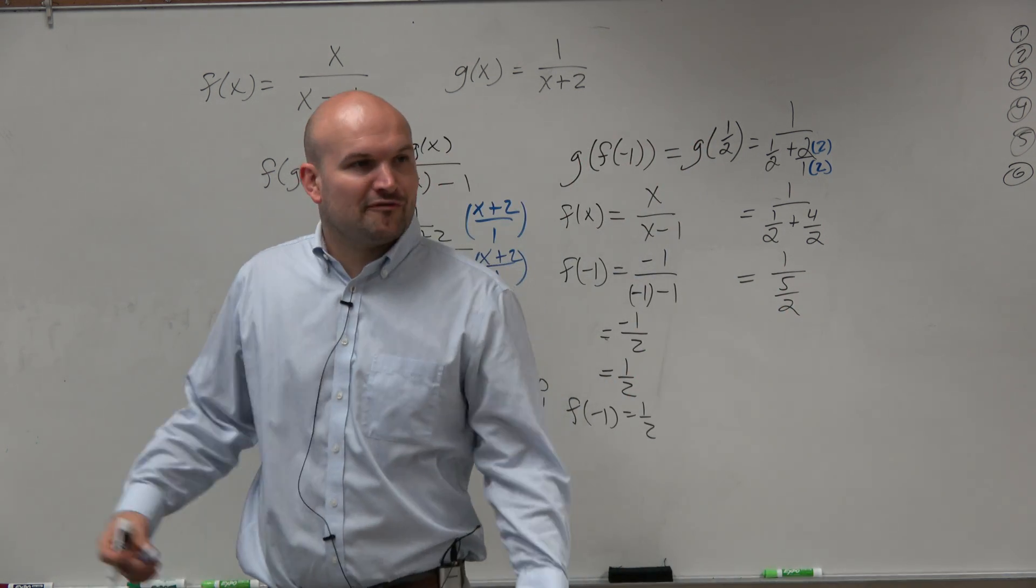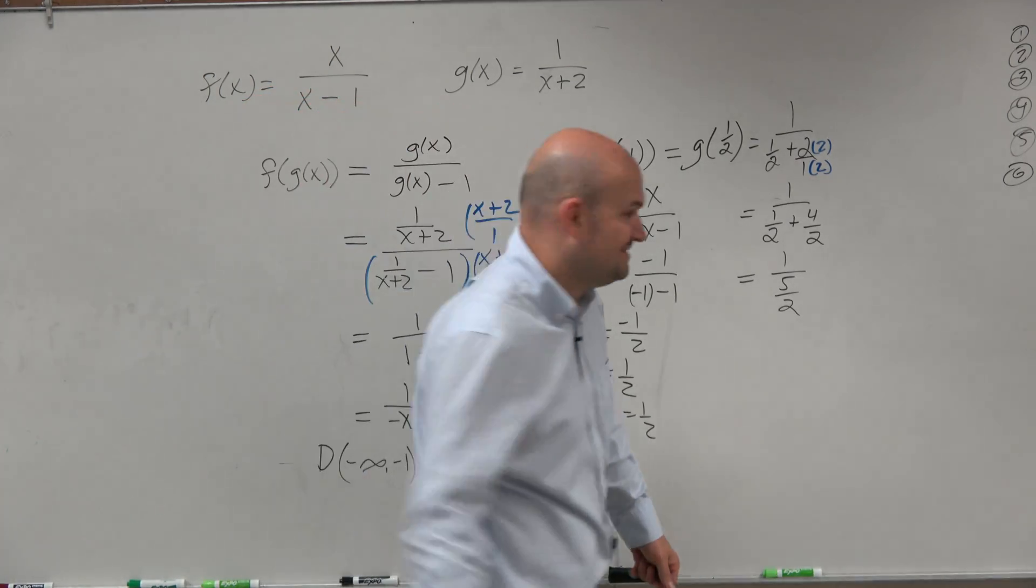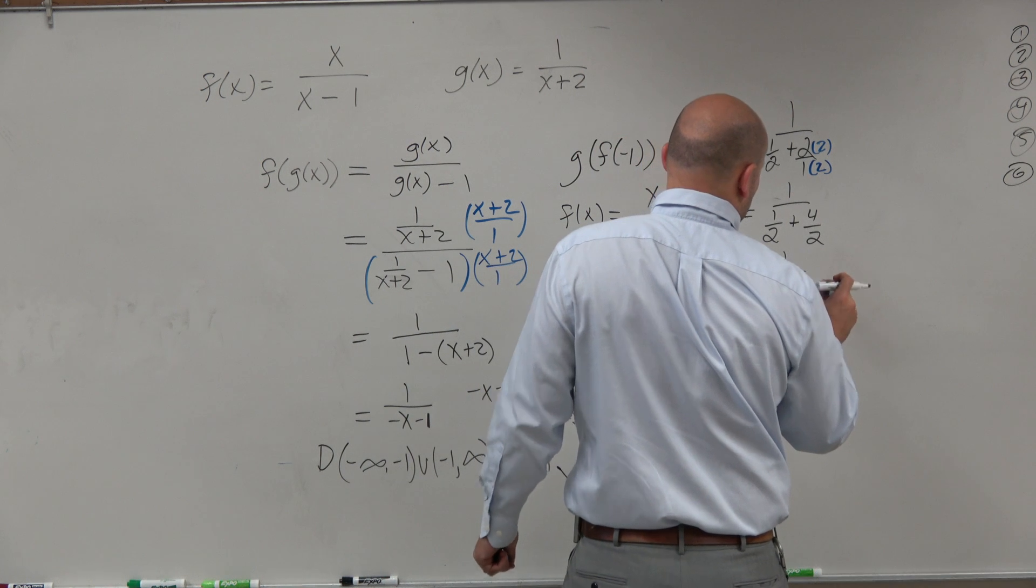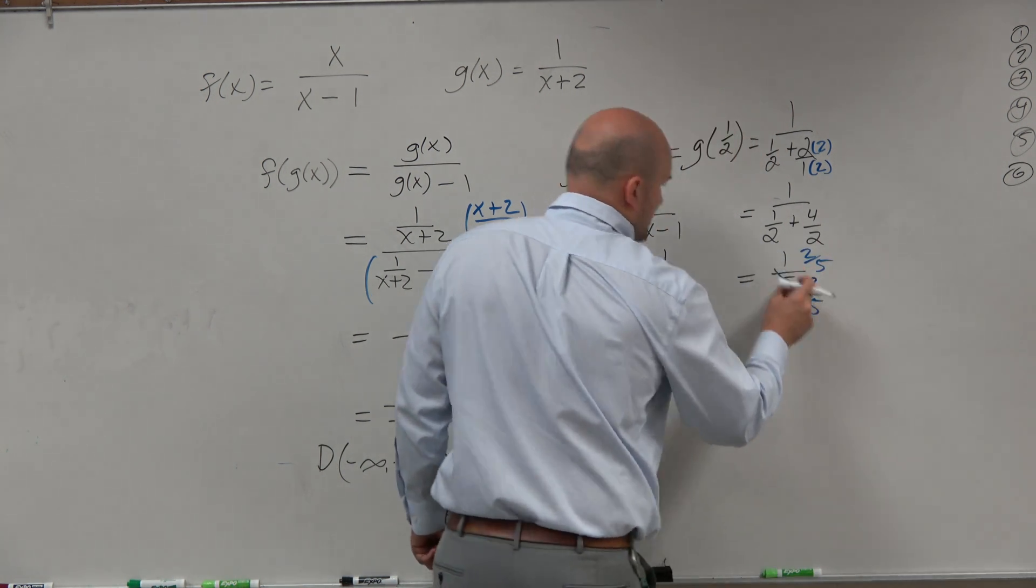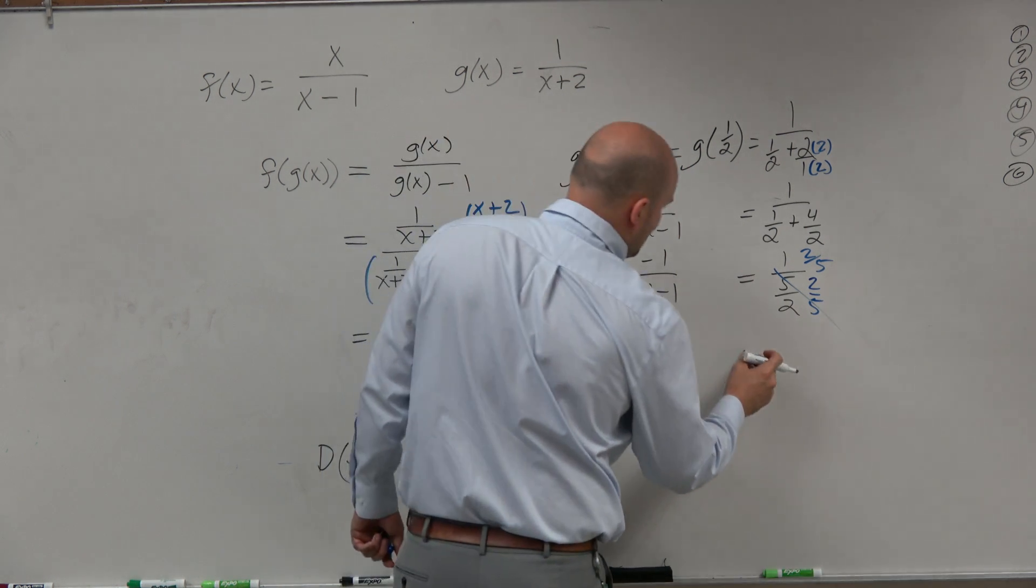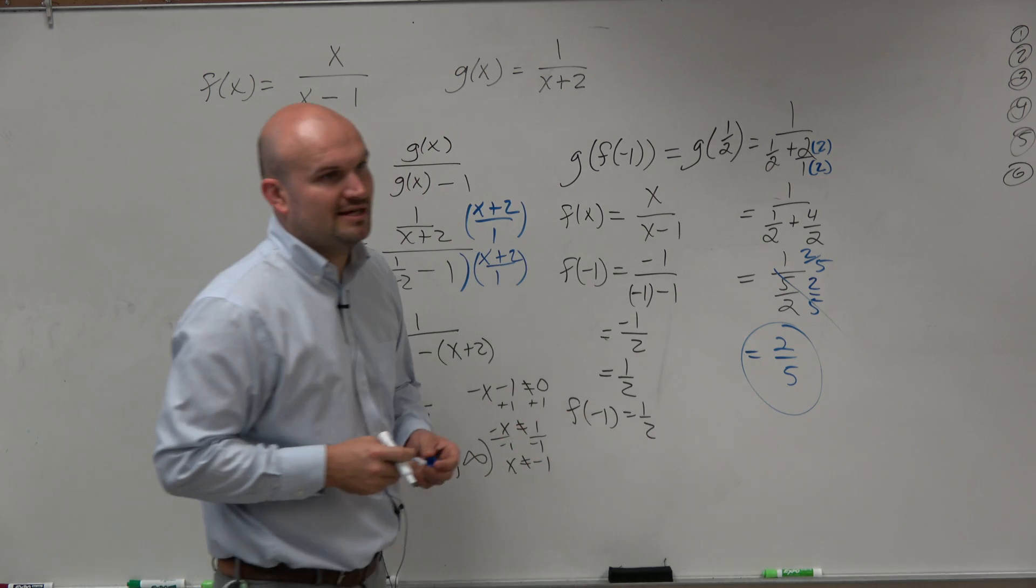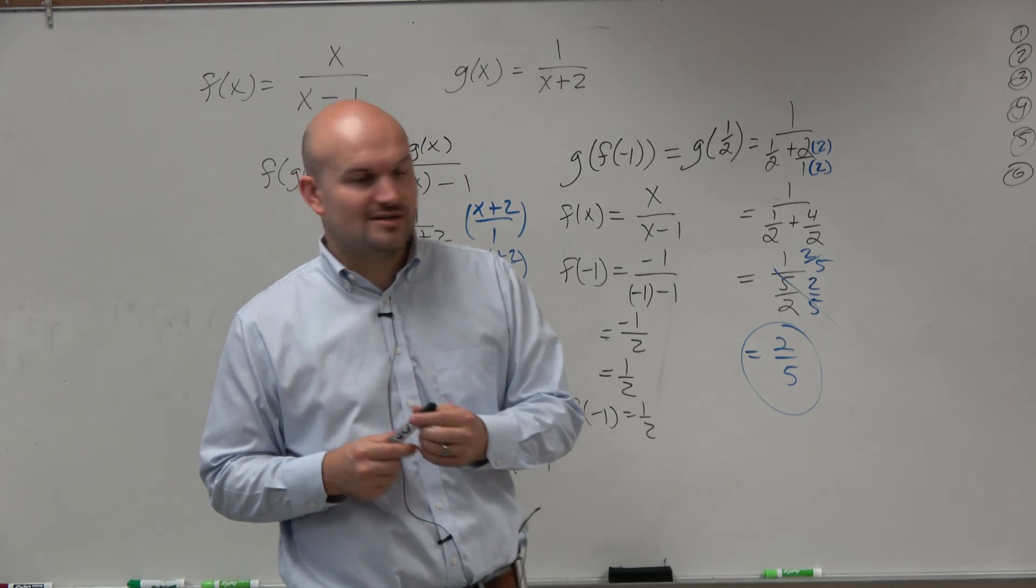Ah, dang it. I still have a fraction in my denominator. How do we get rid of fractions in my denominator? Multiply by the reciprocal. 2 over 5. What's 1 times 2 over 5? 2 over 5. Fractions, fractions are no fun. Fractions, fractions hurt someone.